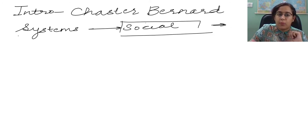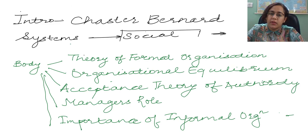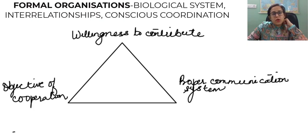So therefore, in the body, we have five subparts, which is one is the theory of formal organization. The other one is the organizational equilibrium. The third one is the acceptance theory of authority. The fourth one is the manager's role. And the fifth one is the importance of informal organization.